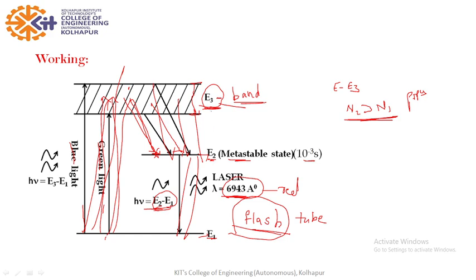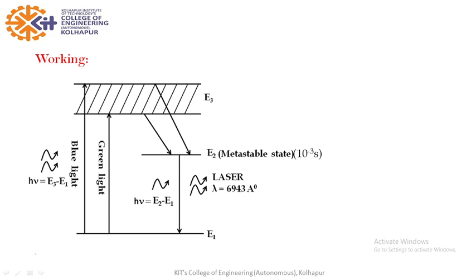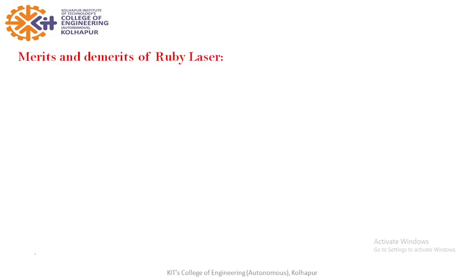If all these N atoms come down to E2 and then E1, then stimulated emission will stop and laser beam ceases. Again we can restart it by again flashing the tube. Thus we can say that it is a pulse laser. When we start a xenon discharge tube, it gives one pulse, so it is the pulse laser.